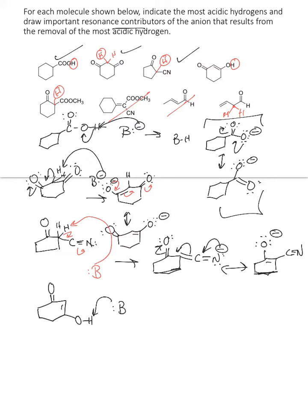The base deprotonated — this is a 1,4 system. Actually, that would be your most acidic proton, because that's a pKa of about 16 to 18 for the alcohol, and your pKa value over here is about 20. So those electrons go here and you get a resonance structure that looks like this compound here.